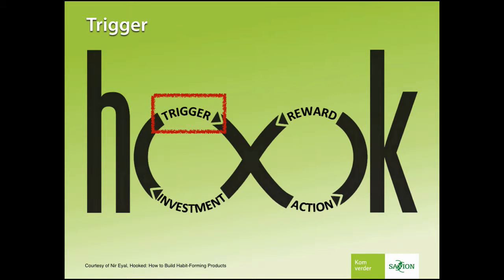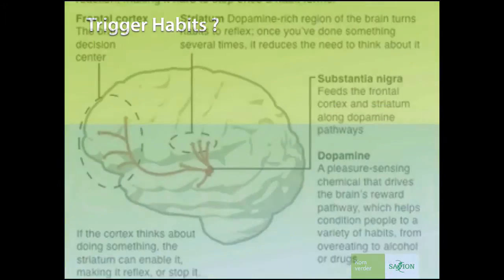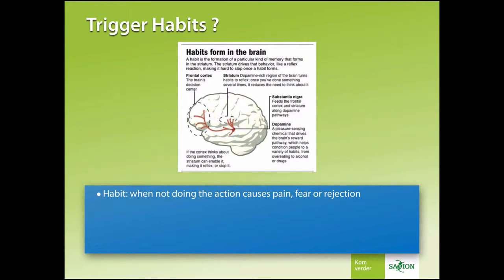The hook system has four important steps: trigger, action, reward, and investment. Let's start with the trigger. The trigger starts the hook system and is most powerful when it's connected towards a habit. A habit needs action. When you don't perform that action, you will feel pain, fear, and rejection.